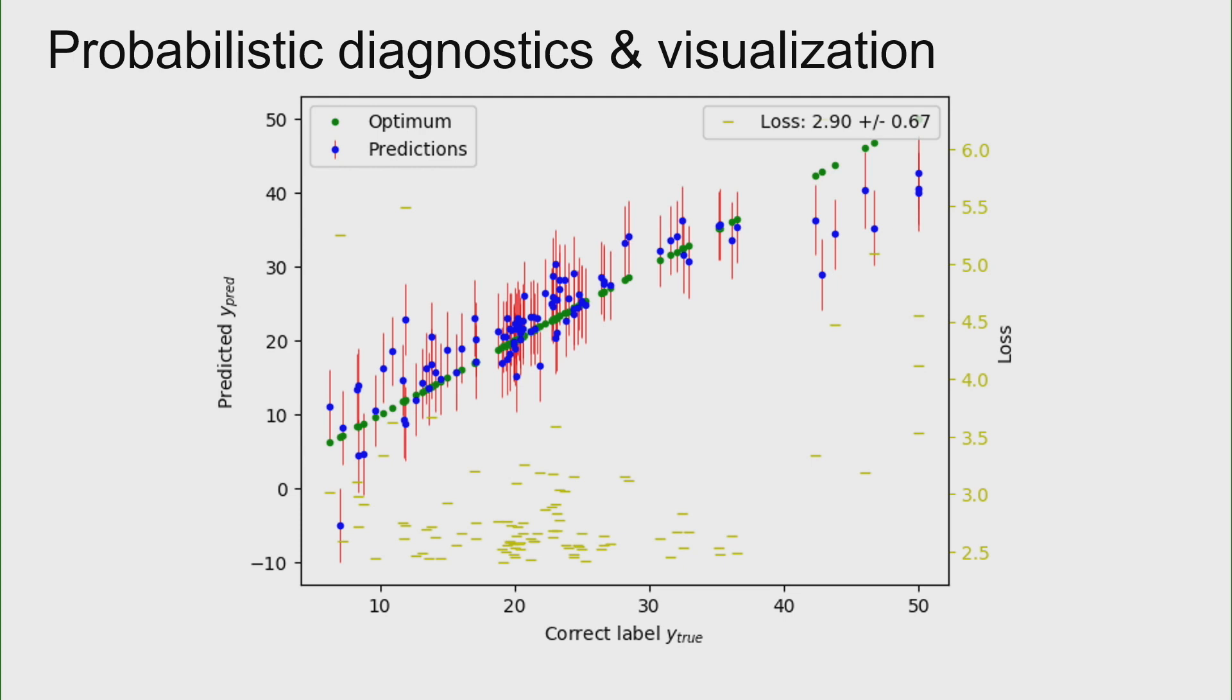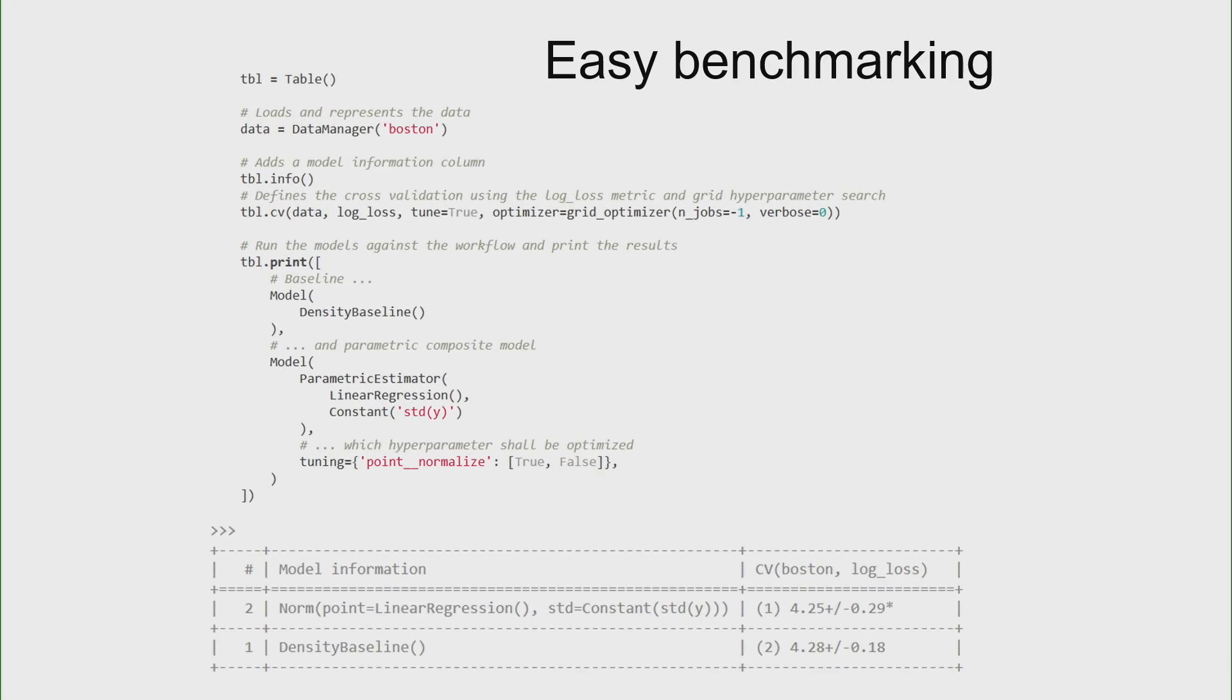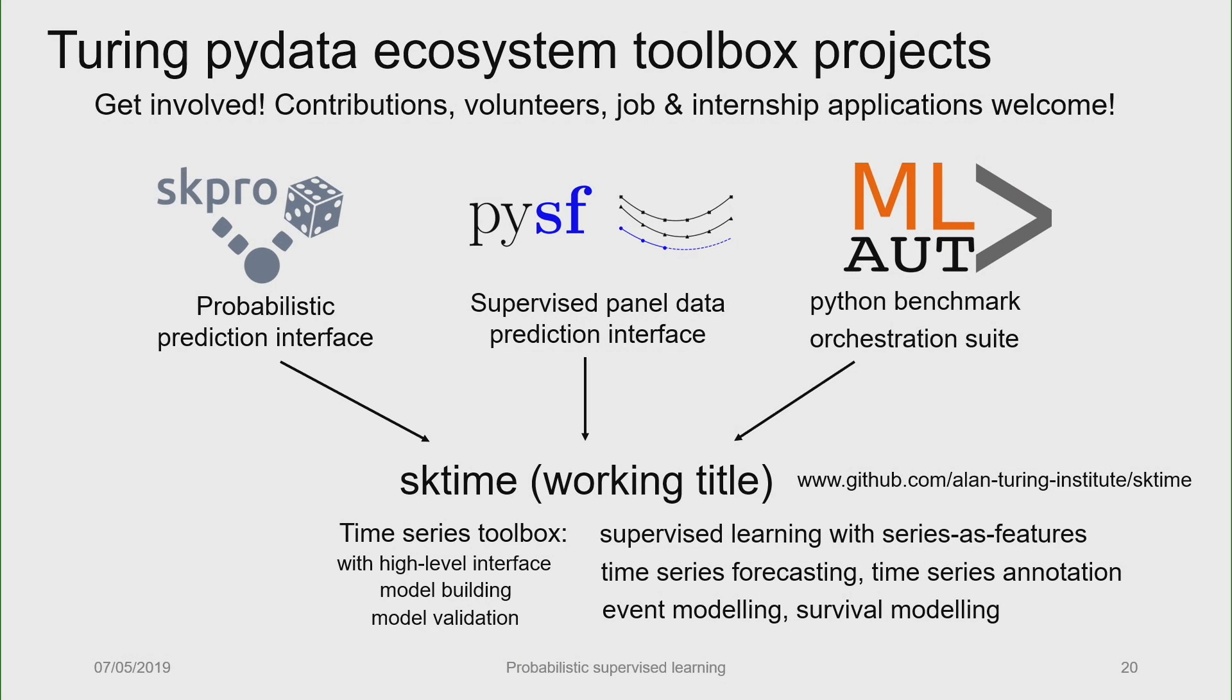And benchmarking, so it's a little bit buggy, the benchmarking feature. As said, we're still looking for a new main developer and contributors. Furthermore, there are actually other projects happening at the Turing which I wanted to mention, of which SKPro, in which SKPro might have an important part. So currently I'm spending most time in the toolbox area on a package that is meant to deal with time series, so supervised learning with time series, forecasting, forecasting when examples are available, event modeling. It has a relatively large vision, and currently we're trying to ramp up people power on that one.